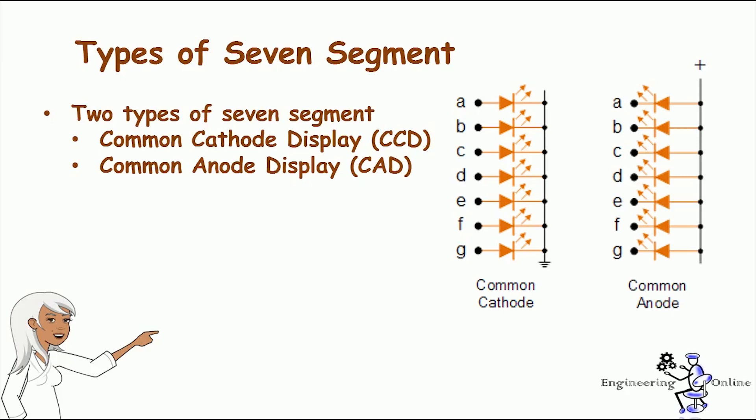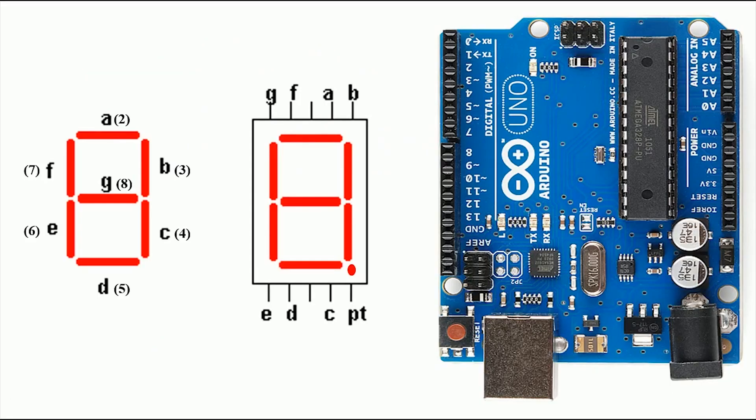The common anode display is the exact opposite. In a common anode display, the positive terminal of all eight LEDs are connected together and then connected to pin 3 and pin 8. To turn on an individual segment you have to ground one of the pins. The following diagram shows the internal structure of the common anode seven segment display.